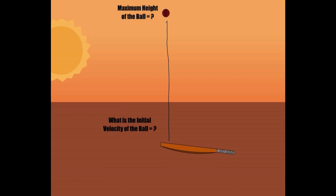As the ball reached at the top and then came back to its initial position within 6 seconds, dividing by 2 we can get the time of one side journey of the ball, which is equal to 3 seconds. This means the ball took 3 seconds to reach the maximum height and then again took 3 seconds to come back to its initial position.